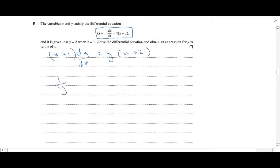So, this could be 1 upon y dy equals to (x plus 2) upon (x plus 1) dx. This would be x upon (x plus 1) plus 2 upon (x plus 1).